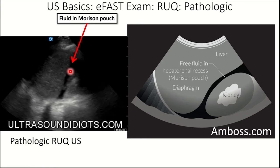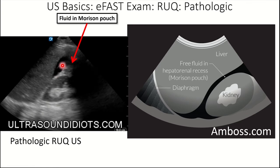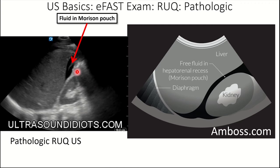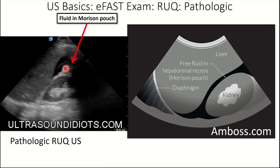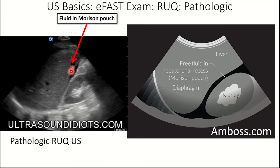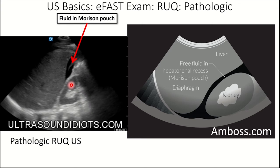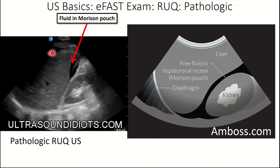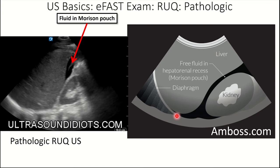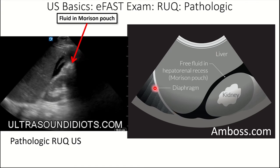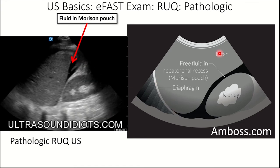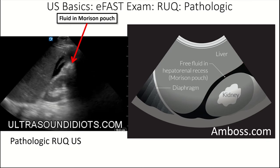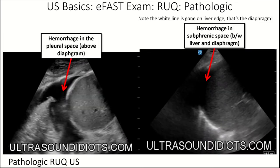Now some abnormal images. Here is fluid in Morrison's pouch — the space between the liver and kidney. We can see a sliver of tissue, likely part of the liver, and that black anechoic fluid is most likely hemorrhage in a trauma patient. There's also some fluid visible in other areas. In the graphical depiction: the diaphragmatic white stripe, the lung, the liver, and free fluid in the hepatorenal recess known as Morrison's pouch.